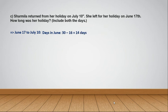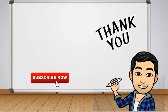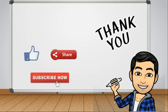We need to subtract the first 16 days of June because she started from the 17th of June. So 30 minus 16 equals 14 days. She returned on July 10th, so from 1st July to 10th July there are 10 days. The total number of days is 14 plus 10, which equals 24. So she went on holiday for 24 days. Thank you for watching — don't forget to like, share, and subscribe to my channel.